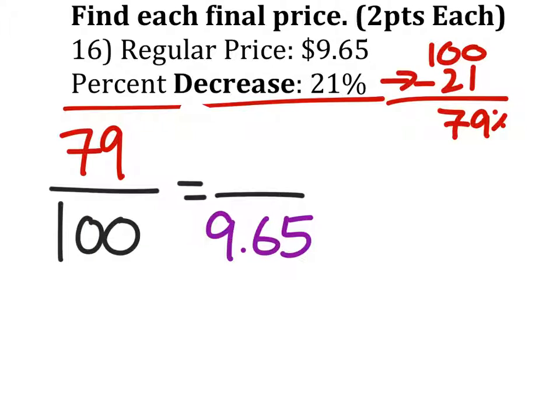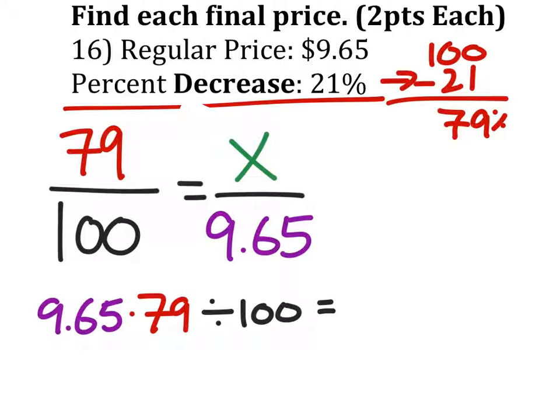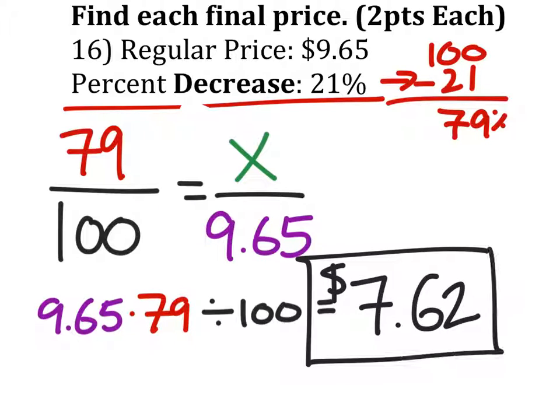We will be solving for X. So once again, using bowtie, fishy method, you can use cross multiplication if you choose, but this would be $9.65 times the 79% divided by 100, which gives me, bam, $7.62, which I think is what we got before.